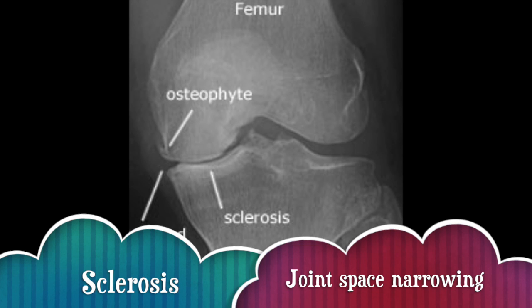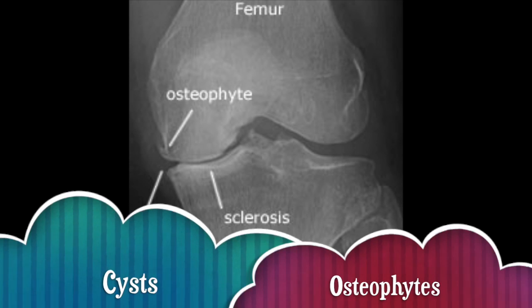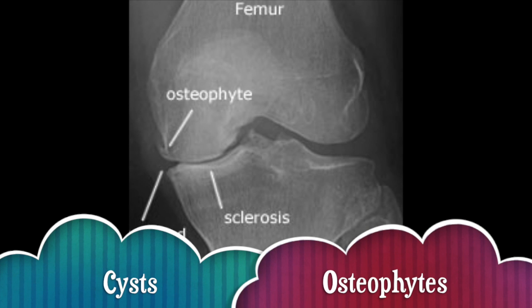First is sclerosis, the hard and bony tissue. Second, joint space narrowing — always an issue. Third are cysts, which don't show up right. Fourth are osteophytes, which are not a delight.